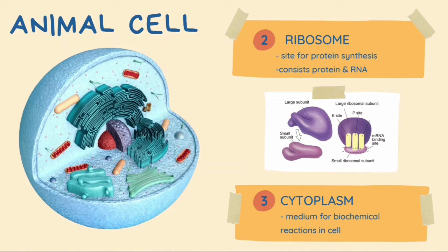Next we have ribosomes. Ribosomes are small, compact and spherical granules that consist of protein and RNA. Ribosomes can be found either attached to the surface of the rough endoplasmic reticulum or freely lying within the cytoplasm of the cell. The function of ribosomes is as the site for protein synthesis.